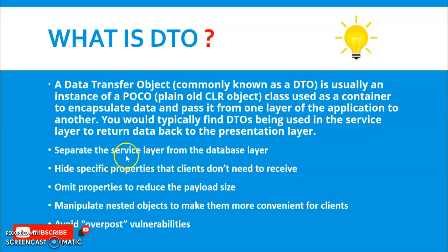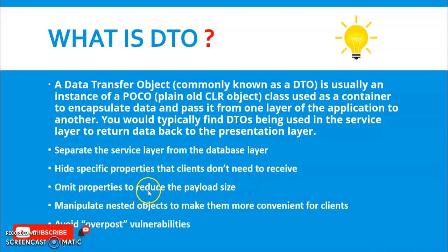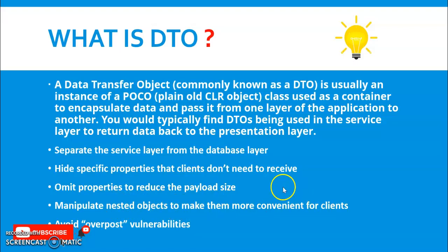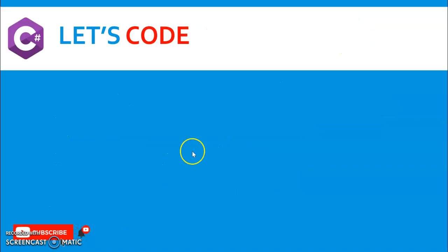DTO separates the service layer from the database layer. It hides specific properties that the client doesn't need to receive, omits properties to reduce payload size, and manipulates nested objects to make them more convenient for the client.